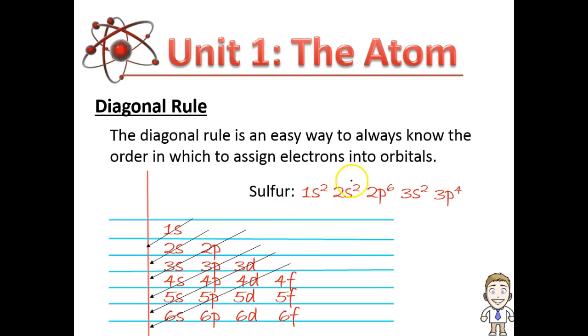And that's up to 2, 4, 10, 12, 16. For sulfur, you could follow this as far down as you needed to go. The diagonal rule always works, so make sure you know it.